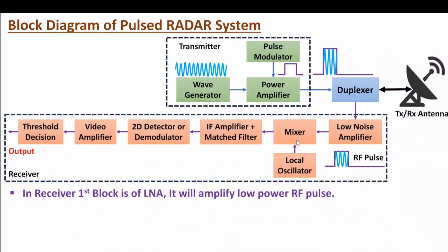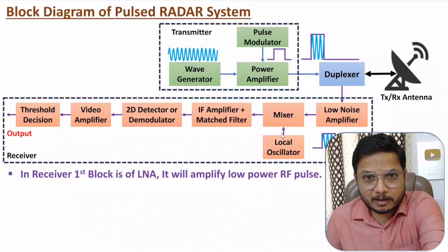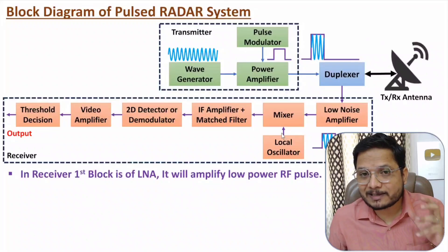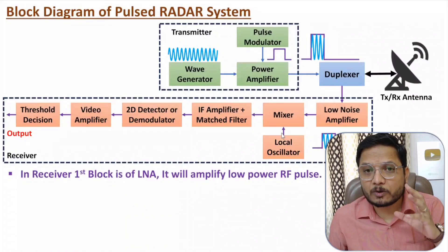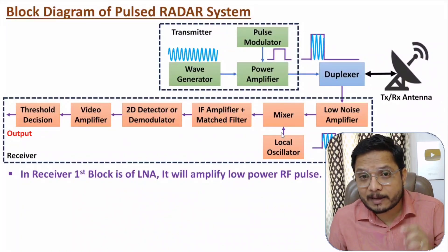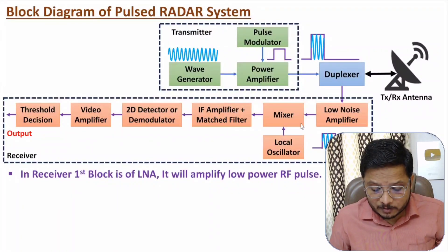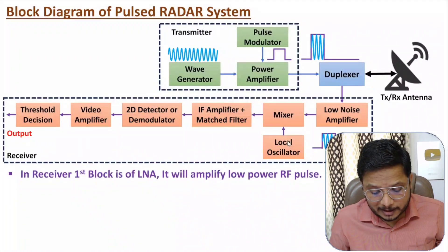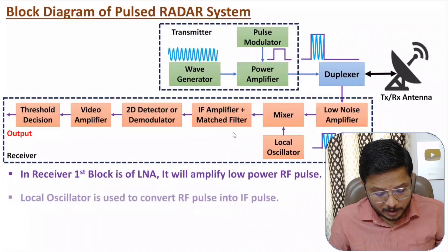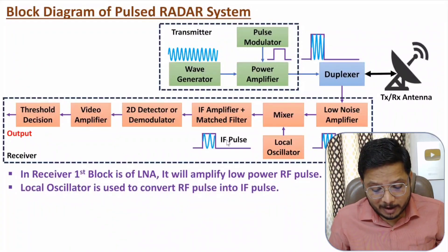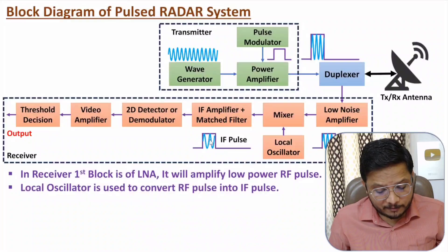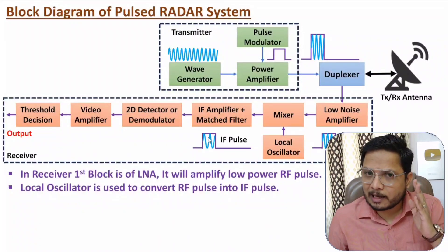After the low noise amplifier we have the mixer and oscillator. After the low noise amplifier we have an RF signal. The mixer and oscillator are used to convert the RF signal into an IF (intermediate frequency) signal. The RF signal is at very high frequency — in terms of gigahertz. With the use of the mixer and oscillator, the intermediate frequency is generated, and the frequency of IF is lower than RF, so now we have an IF pulse.